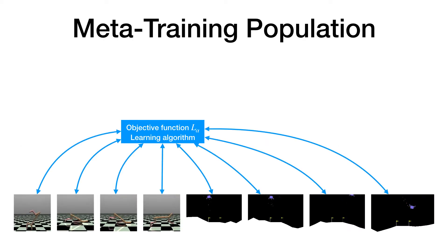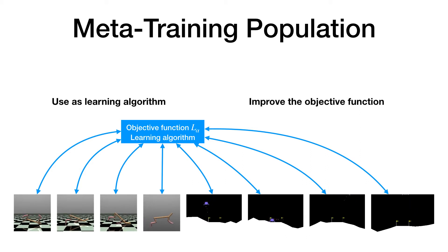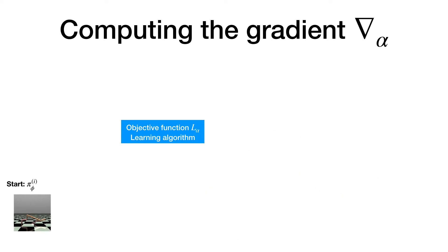In meta-general, a population of agents situated in different environments make use of a single objective function as their learning algorithm. At the same time, their collective experiences also serve to improve the objective function via meta-learning. More specifically, the experience of each agent can be used to compute a gradient on alpha, as we will see next.